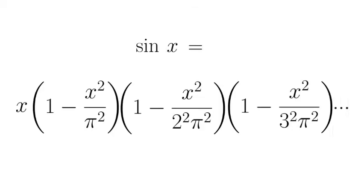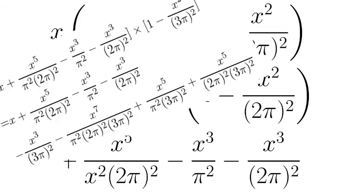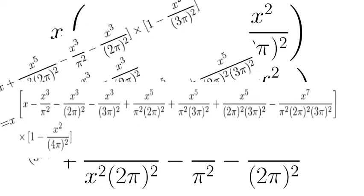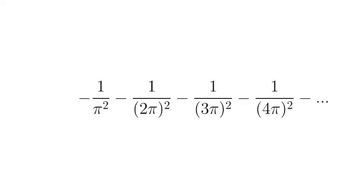How do we multiply an infinite product? It gets busy very fast. But remember, we only want the coefficient of x cubed. Eventually, a pattern emerges. The x cubed coefficient equals negative 1 sixth. Remember?